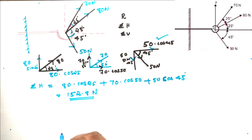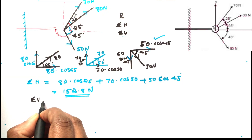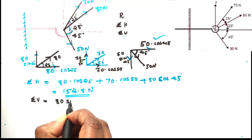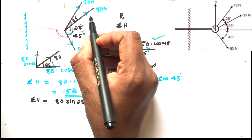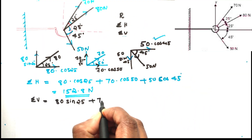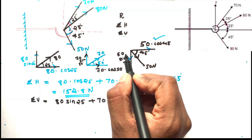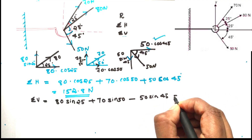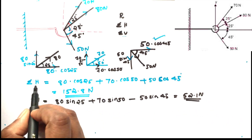Sigma V: the vertical component of 80 Newton is 80 sin 25. The vertical component of 70 Newton is plus 70 sin 50. The 50 Newton acts downwards, so that is minus 50 sin 45. The answer is 52.1 Newtons.